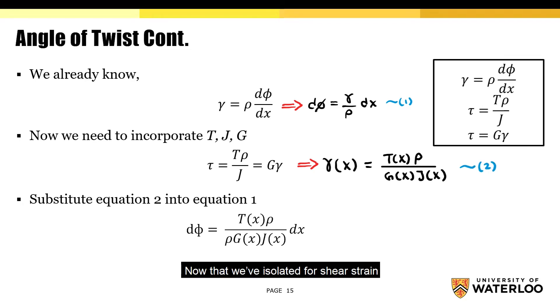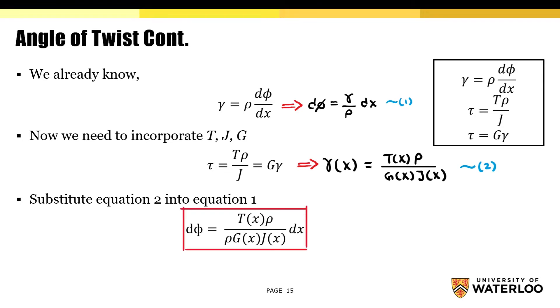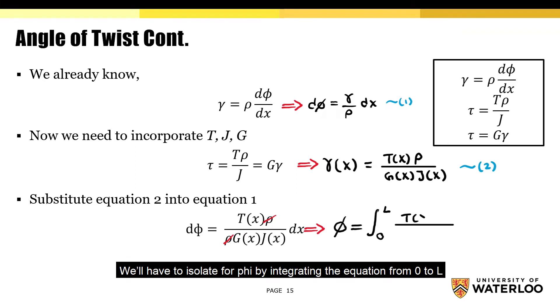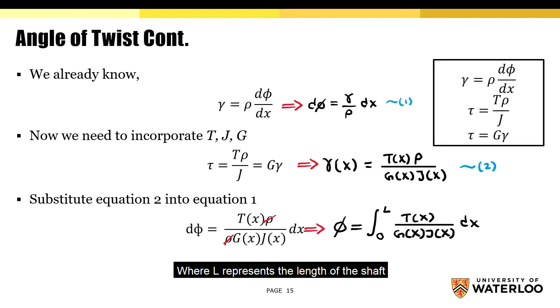Now that we've isolated for shear strain, we can substitute equation 2 into equation 1. Notice how rho from both equations cancel each other out. Since we want to solve for phi and not d phi, we'll have to isolate for phi by integrating the equation from 0 to L, where L represents the length of the shaft. We'll analyze the equation even further on the following slide.